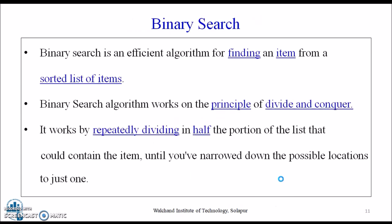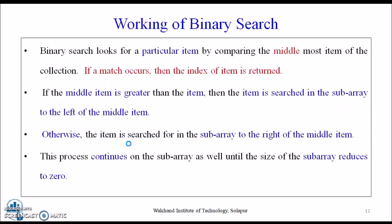Now let's see binary search. Binary search is an efficient algorithm for finding an item from a sorted list of items. Binary search works on the principle of divide and conquer. It works repeatedly by dividing in half the portion of the list.